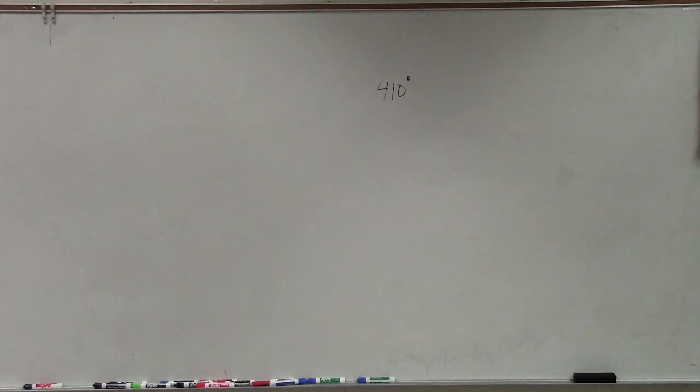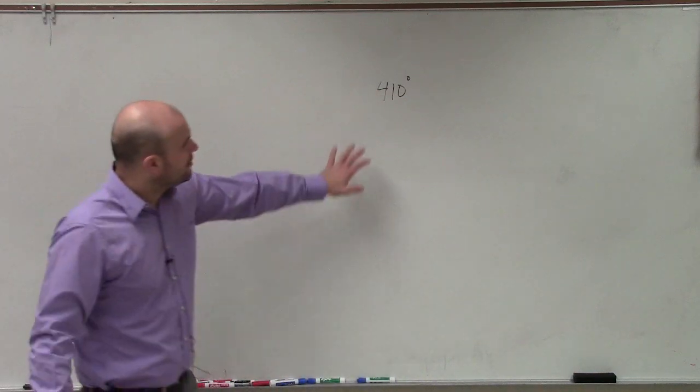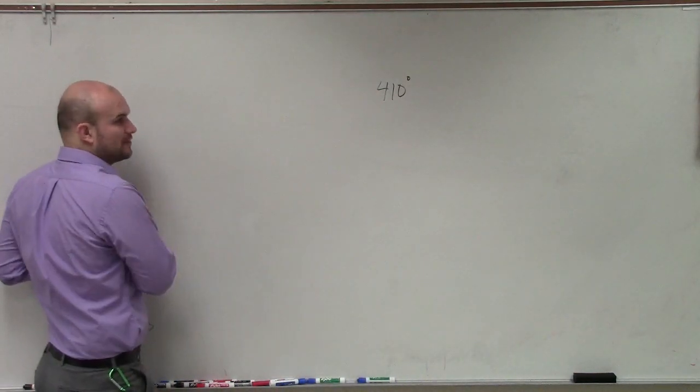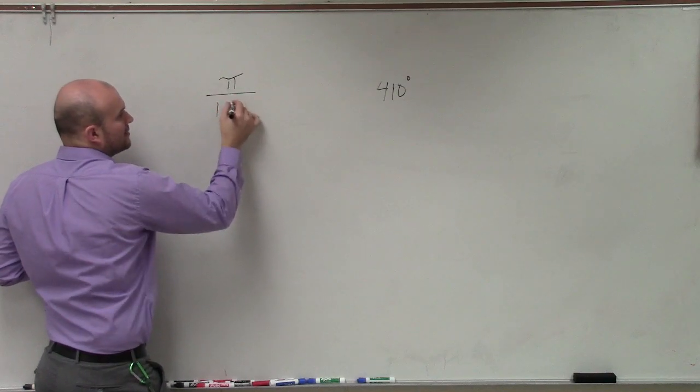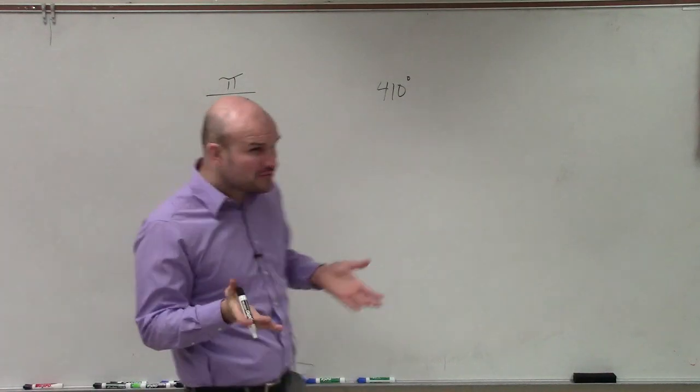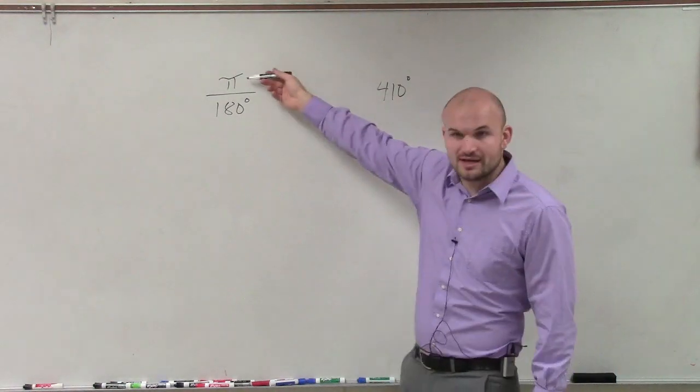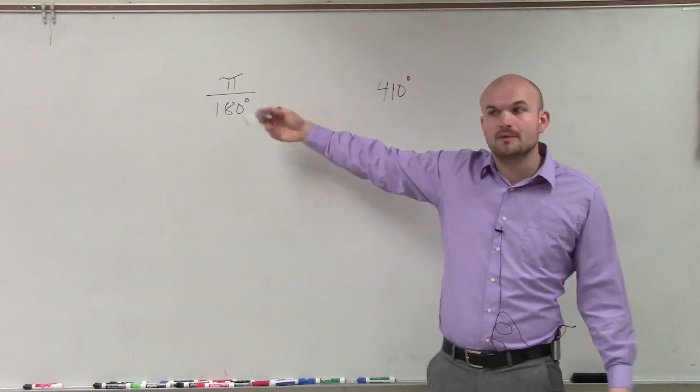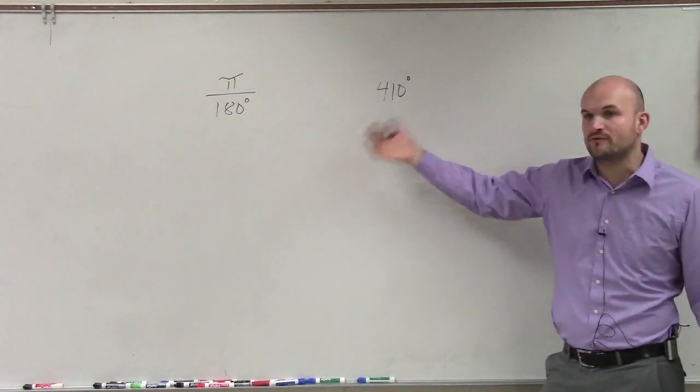So if I want to convert this to degree form, remember that what we did is we created a ratio. Because we said that π over 180, those are really the exact same things. That's the exact same measurement. One's in radian form, and one's in degree form. But what this ratio allows us to do is to convert from one form to the other.